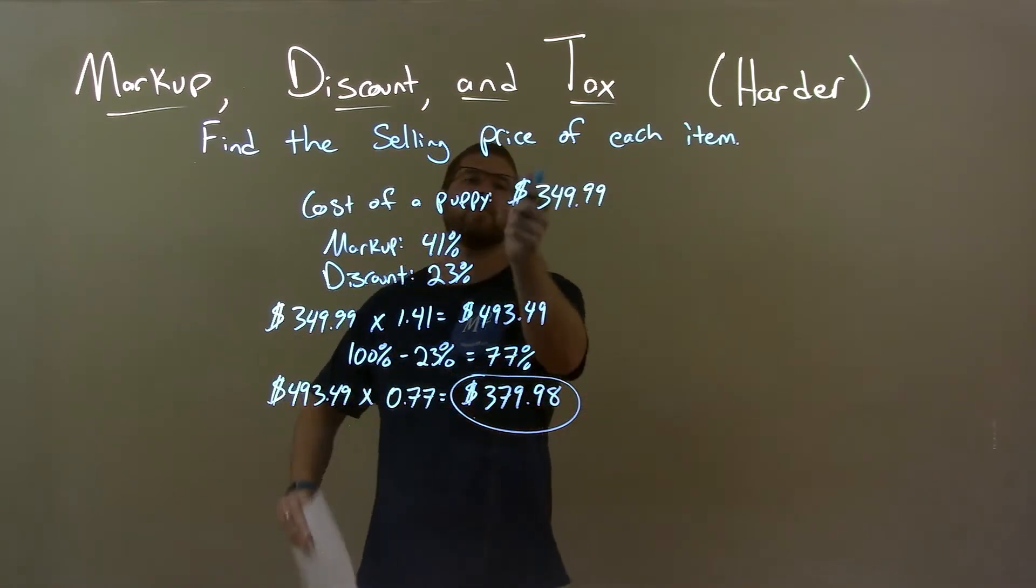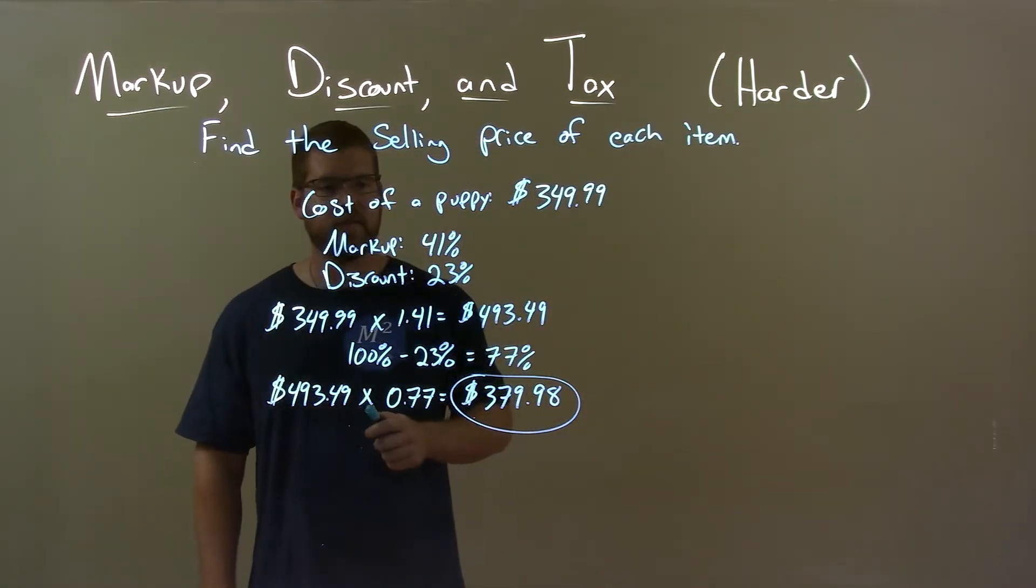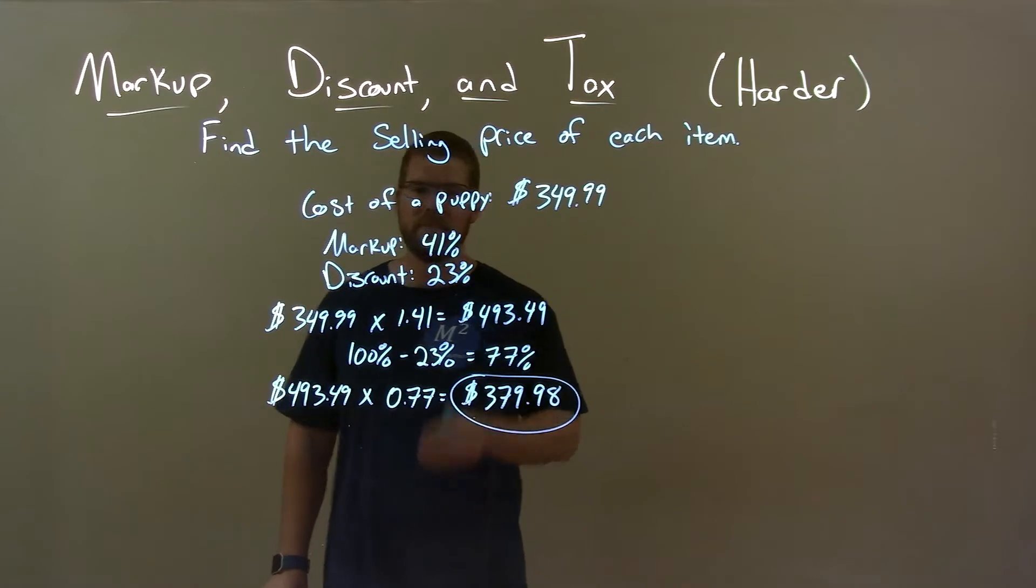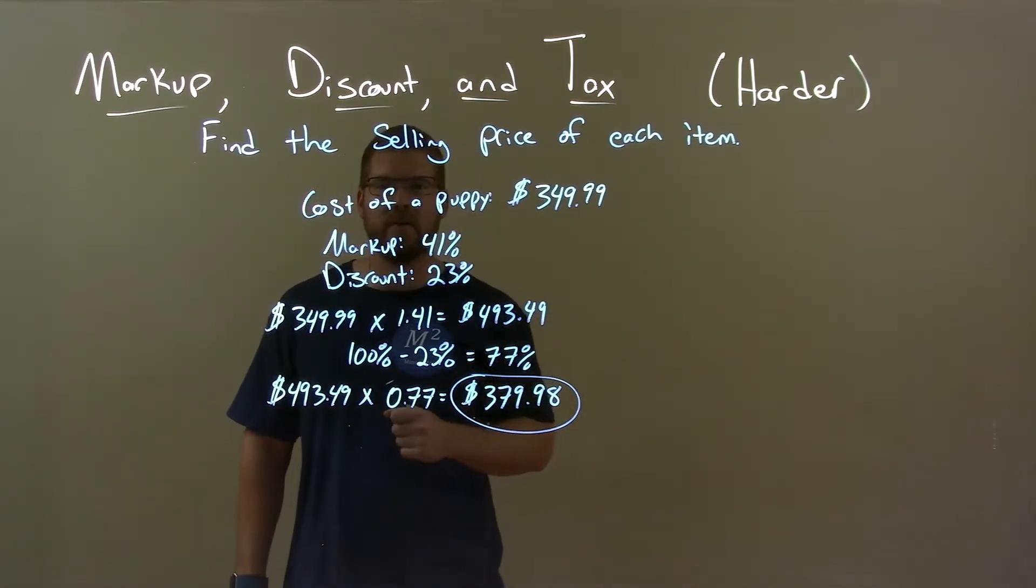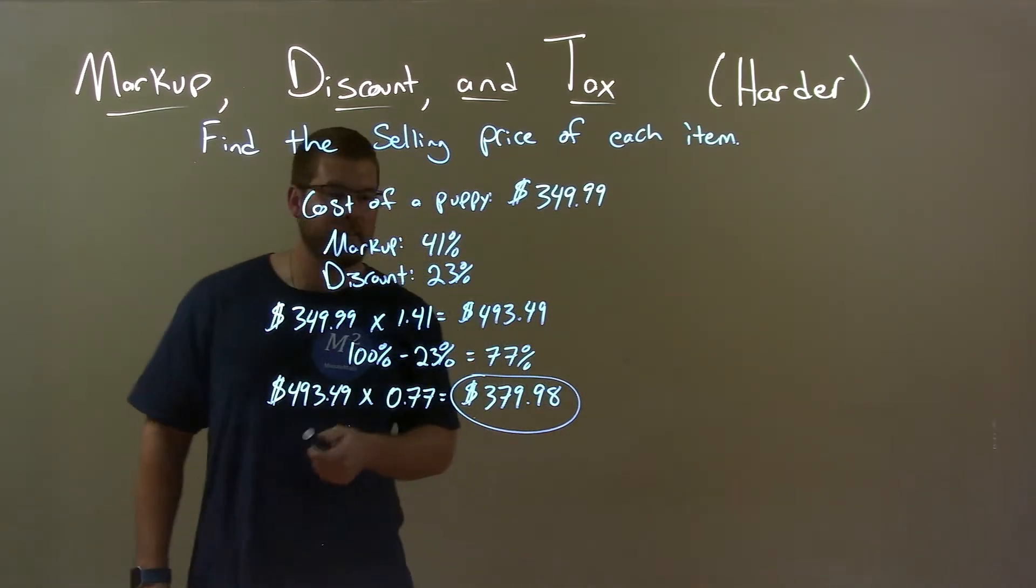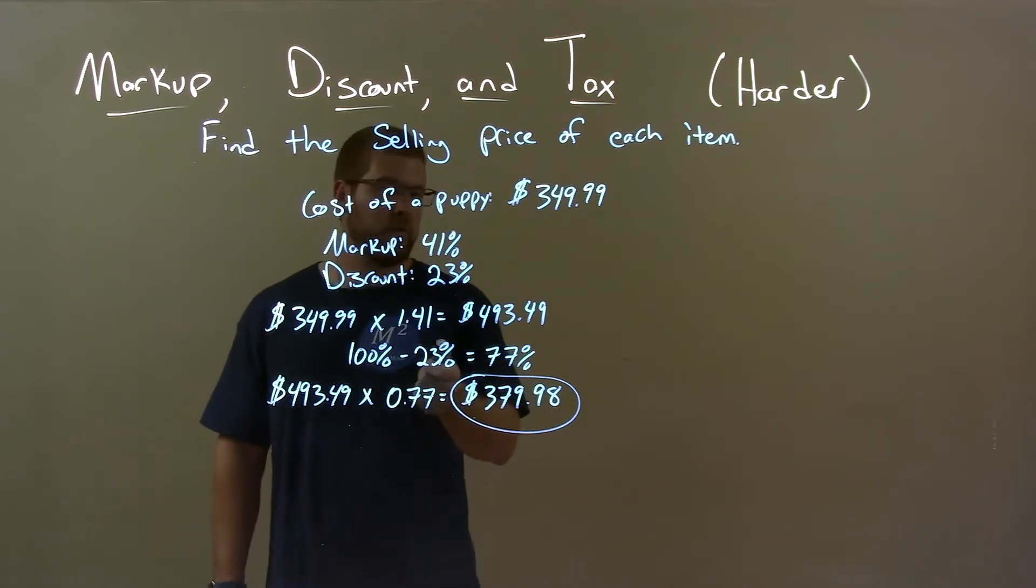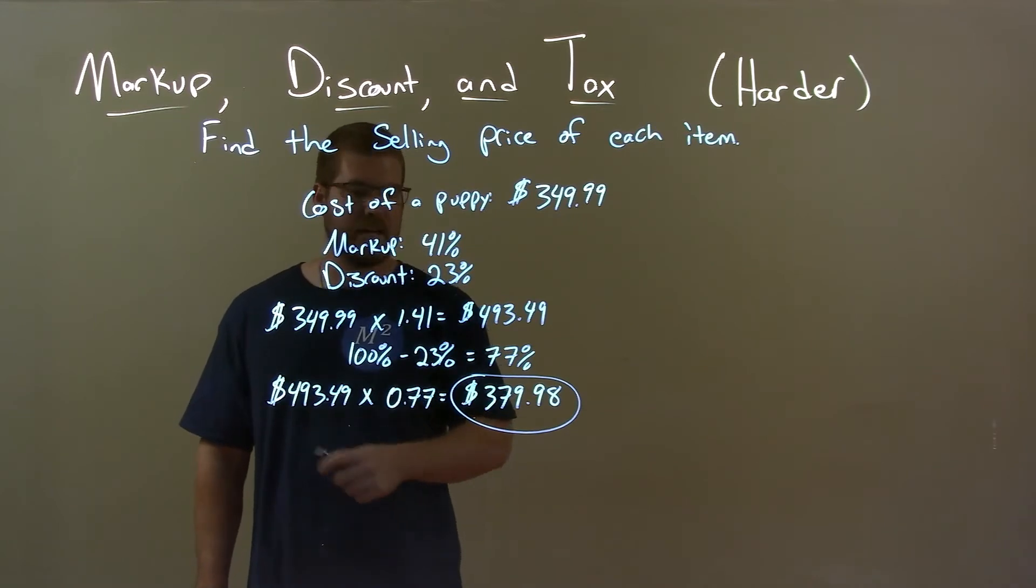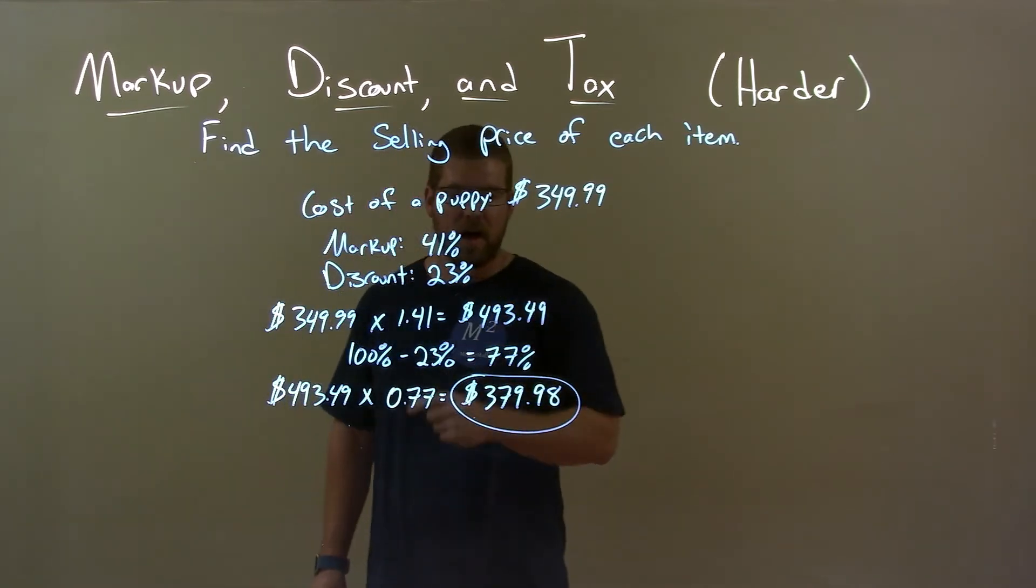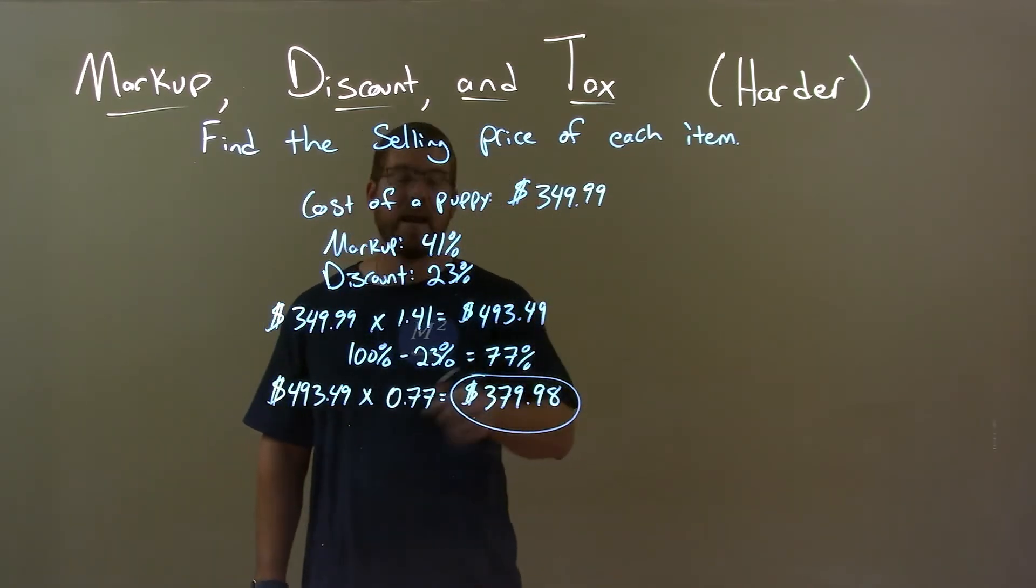Quick recap. We're given a cost of a puppy, $349.99, with a markup of 41% and discount of 23%, and we find the final sale price. We take the cost of the puppy and calculate our markup, 41%. Then, our discount of 23% means we pay 77% of the final markup. By multiplying that by 0.77, we get our final answer of $379.98.